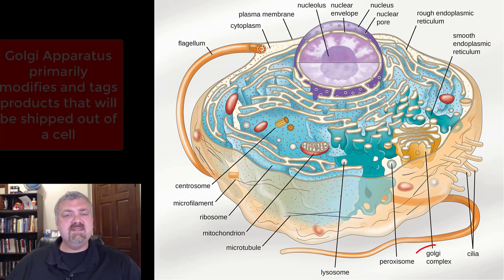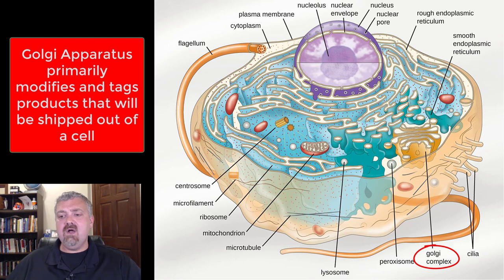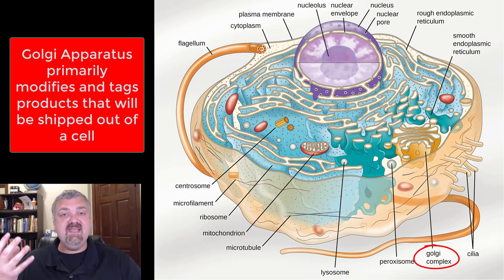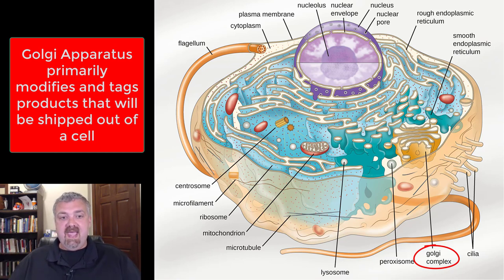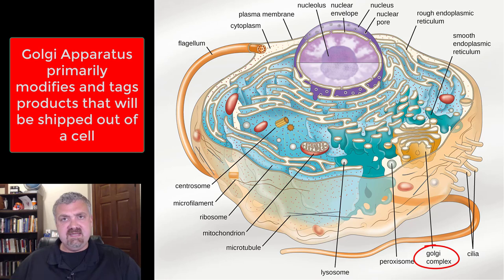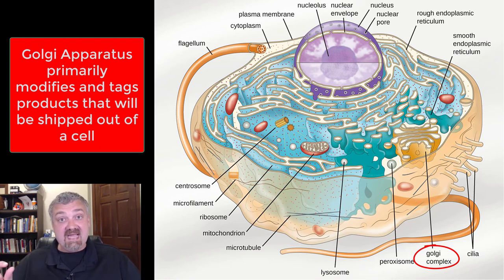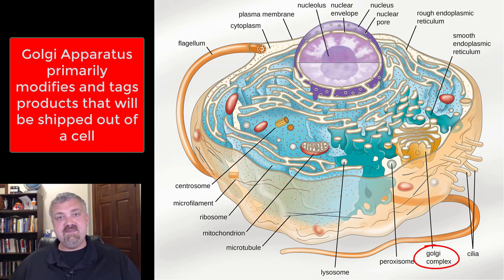Next on this image, we have the Golgi complex, also called the Golgi apparatus — another section of flattened sacs. I think of it as the shipping and receiving center of the cell. It takes materials, modifies and packages them, then puts them in secretory vesicles to be sent out of the cell. Like an Amazon warehouse, it tags material so it knows where to go and sends it out into the world.